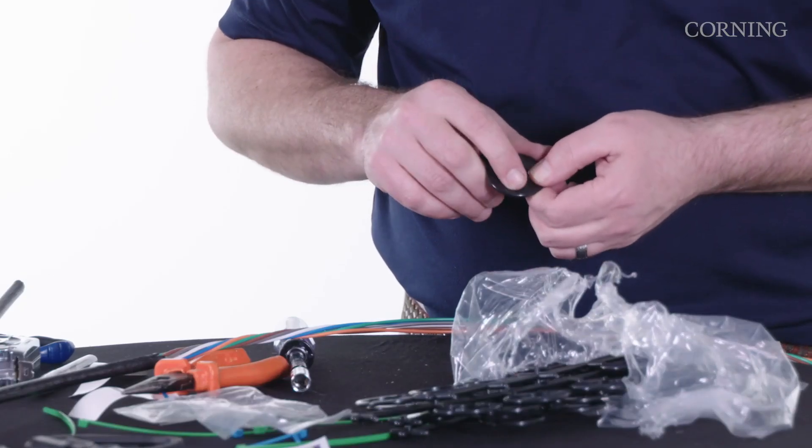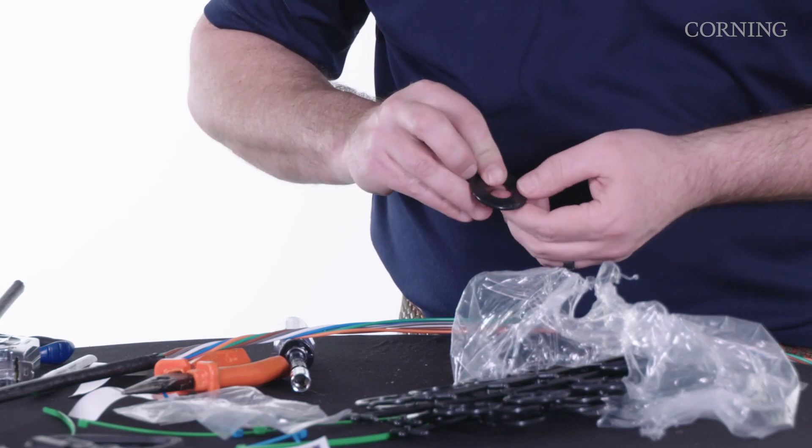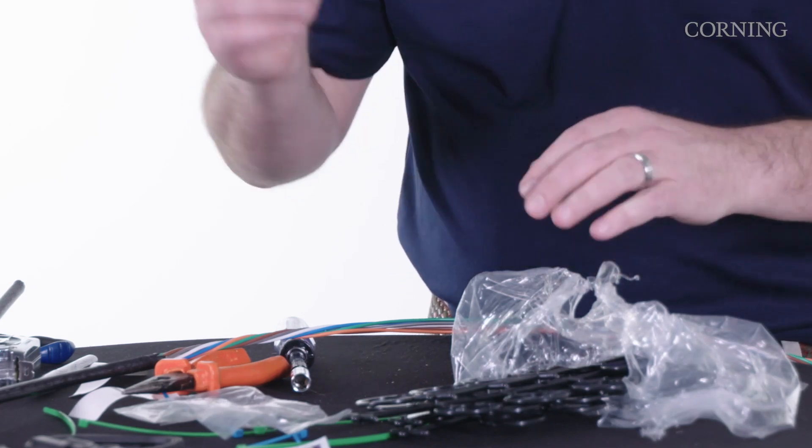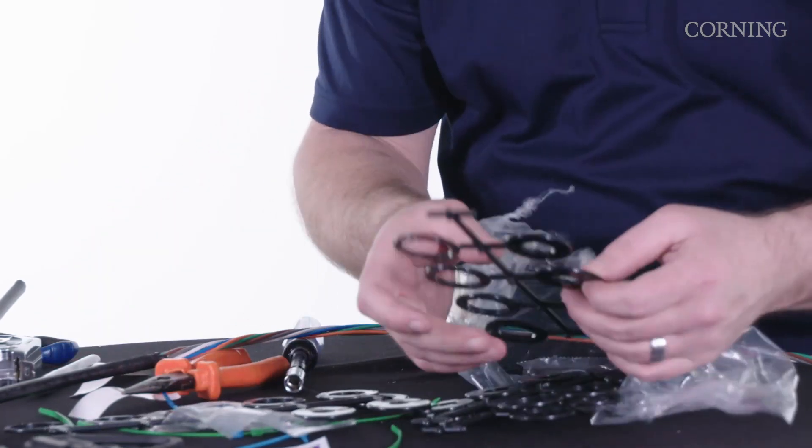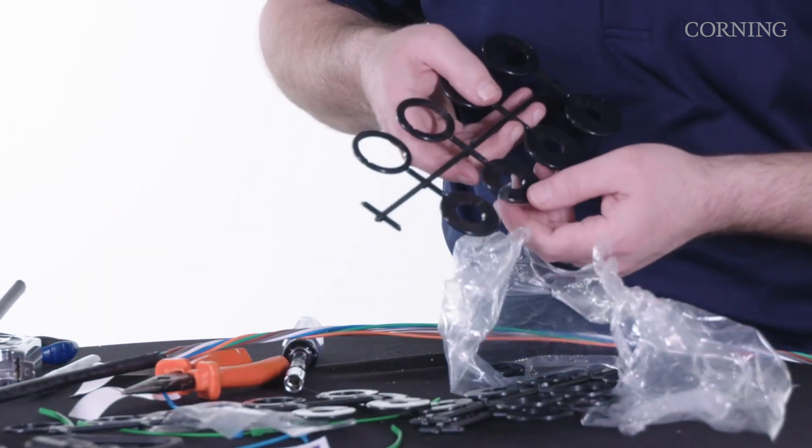One side has inches. This is the 0.7 to 0.8. The other side is millimeters, 17 to 20 millimeters. There are four sets of these. So the ones I'm looking for are 0.6 and 0.7 and I need four of them.